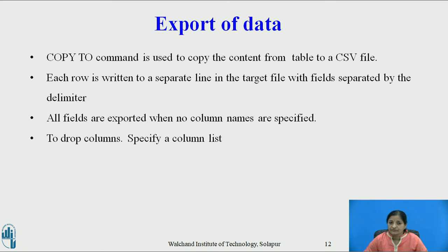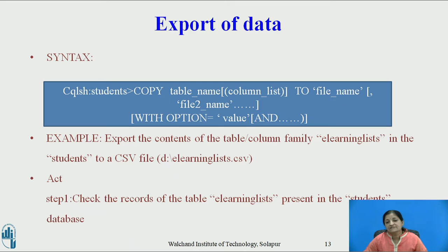Now let's see how to export data. Exporting data means copying data from an existing table into a CSV file. Each row is written into a separate line in the CSV file with fields separated by delimiters. All fields are exported when no columns are specified; to select specific columns, specify a column list. The syntax is: COPY table_name followed by the column list TO file_name (the target file). You can use more than one target file name, and multiple options can be set using AND.